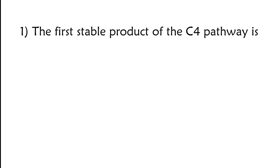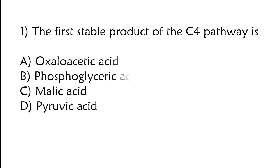The first stable product of the C4 pathway is: oxaloacetic acid, phosphoglyceric acid, malic acid, or pyruvic acid. The correct answer is option A, oxaloacetic acid.